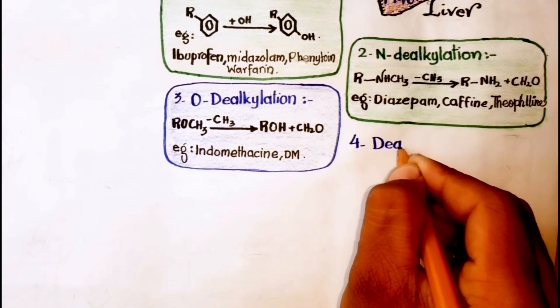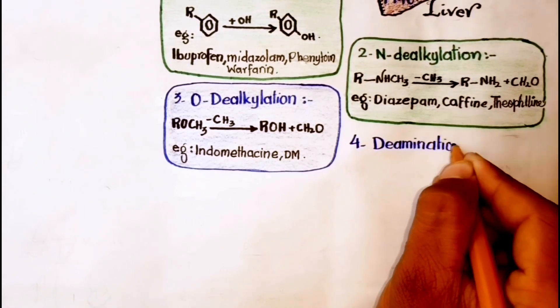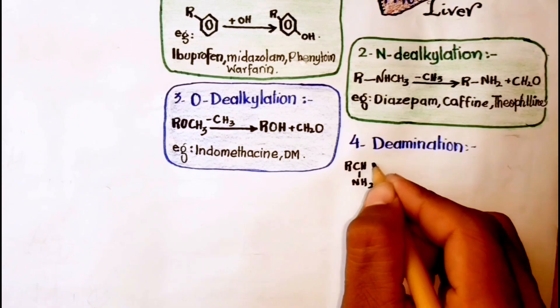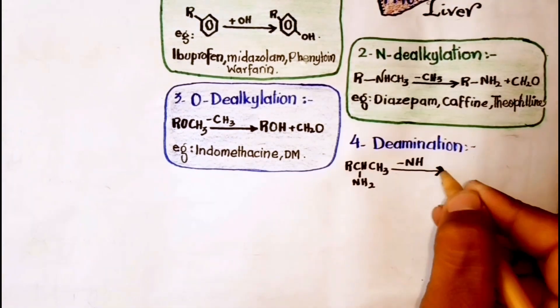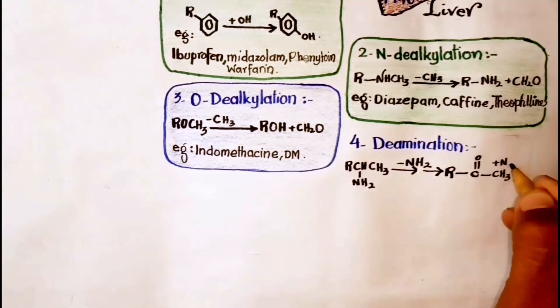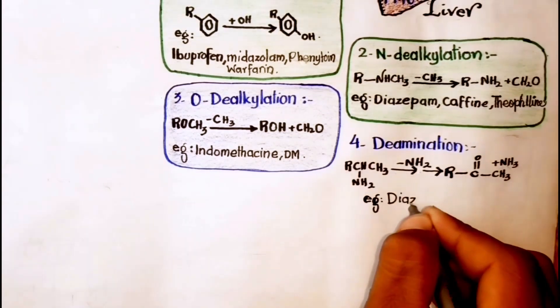Fourth is deamination. In these reactions, removal of amino group from a drug happens. For example, diazepam.